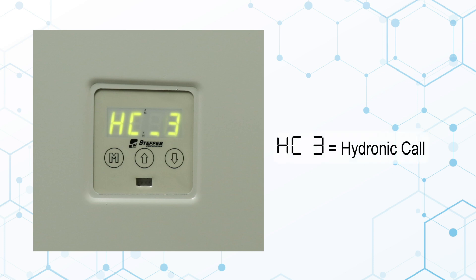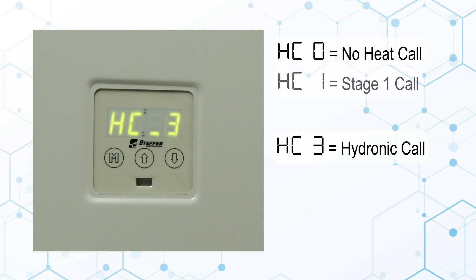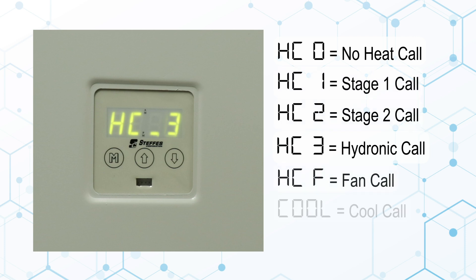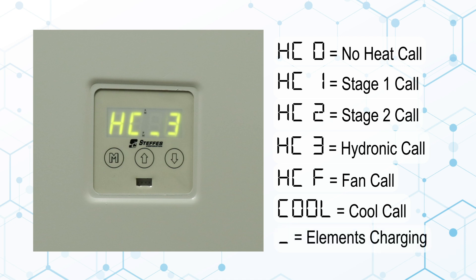HC3 indicates a hydronic heat call. If the hydronic system receives an additional heat call from an optional air handler zone, the faceplate will display the highest heat call value present. When heating elements are energized, an underscore illuminates on the display's third digit after the HC.